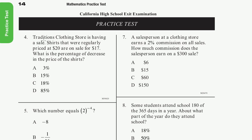We're on problem four. Traditions clothing store is having a sale. Shirts that were regularly priced at $20 are on sale for $17. What is the percentage decrease in the price of the shirts? The decrease in price is from $20 to $17, so the decrease is $3.